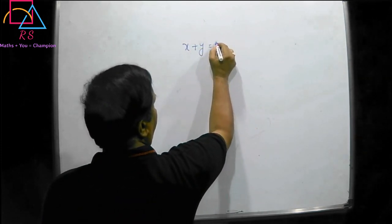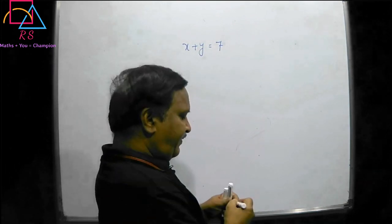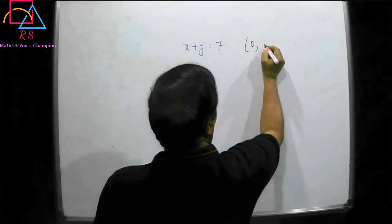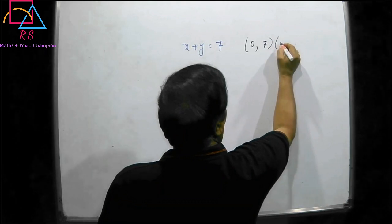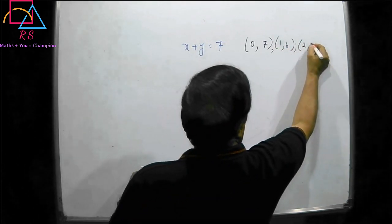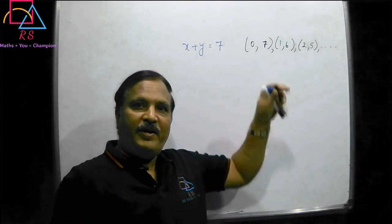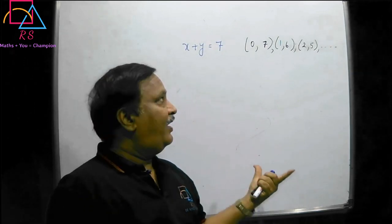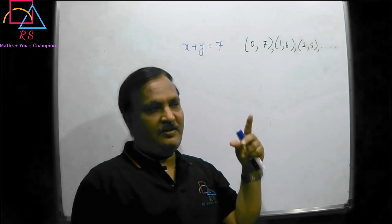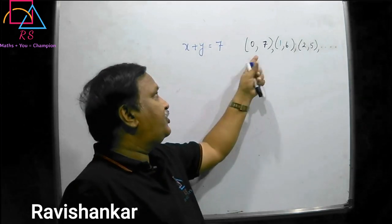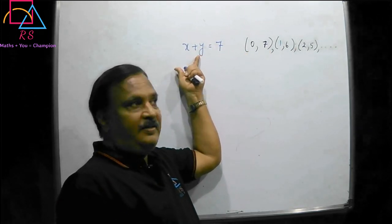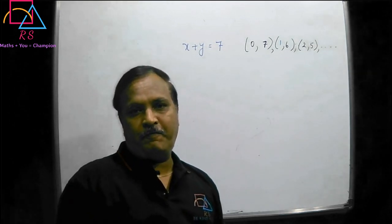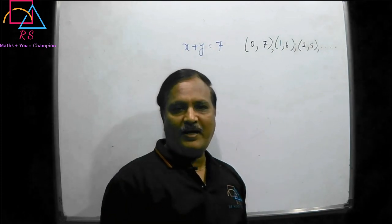In my last class, I explained what is the solution of a linear equation in two variables. I took the example x plus y is equal to 7. For this, we are having so many solutions like (0,7), (1,6), (2,5), and so on. We call these things ordered pairs — ordered pairs because there are two variables, so a pair will be the solution. Each pair is the solution.